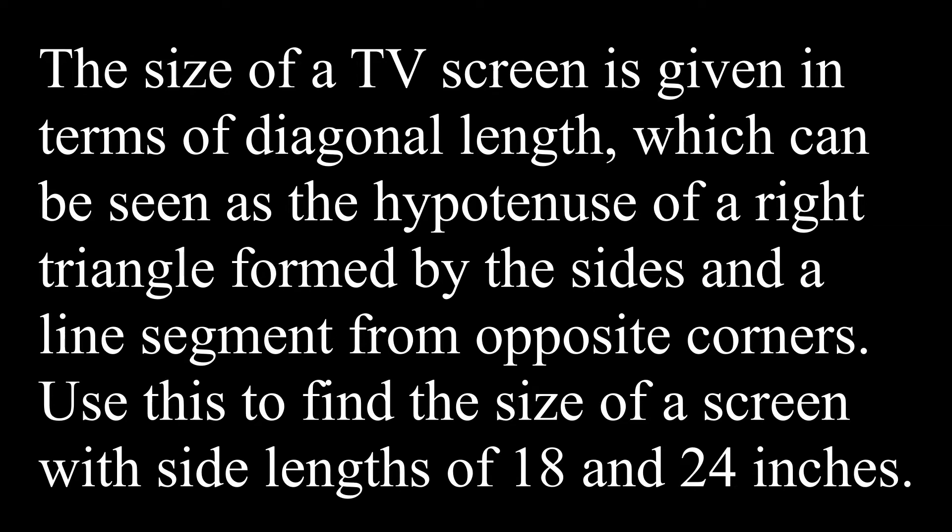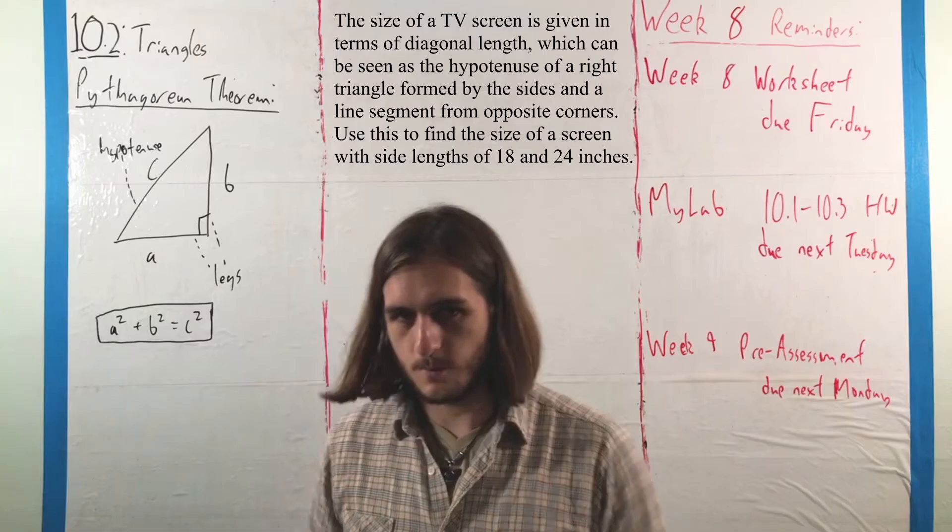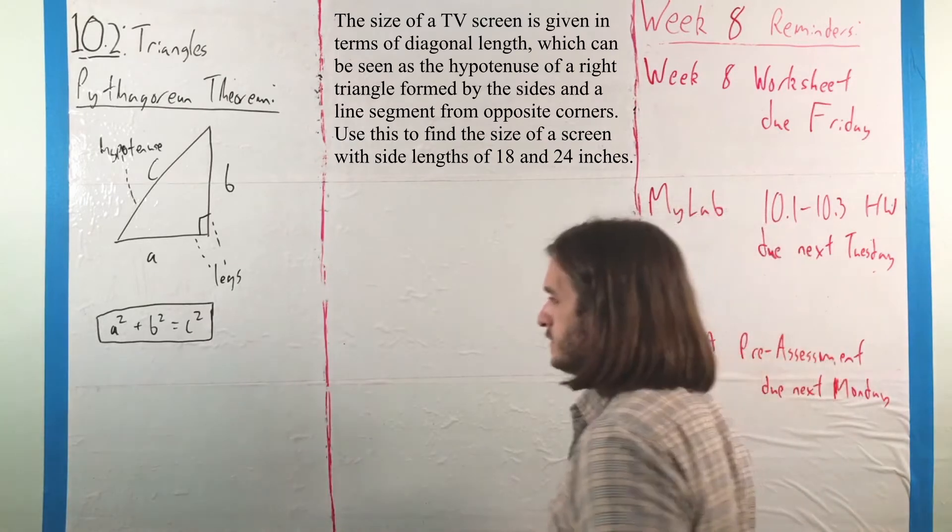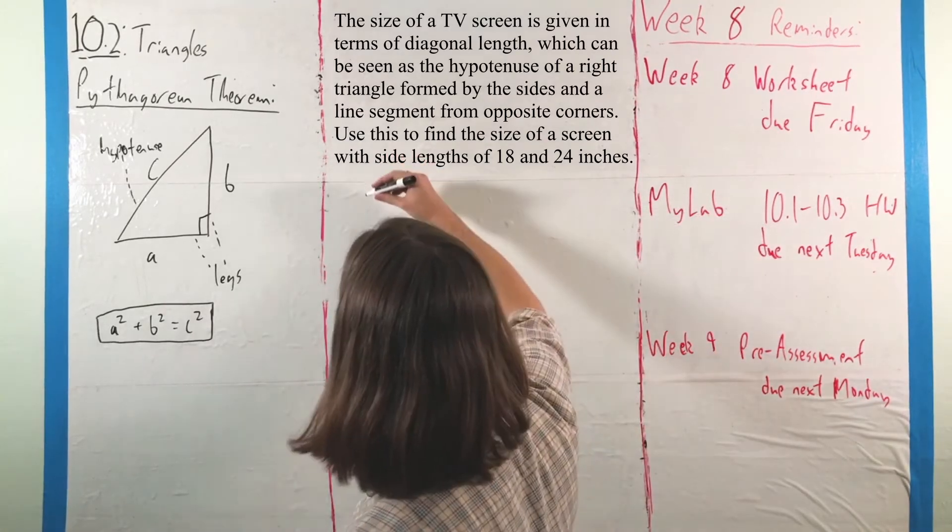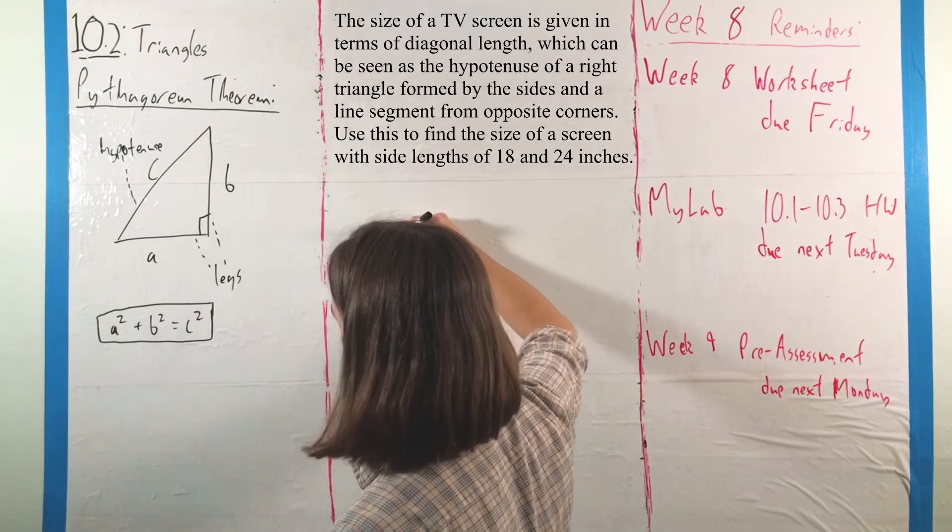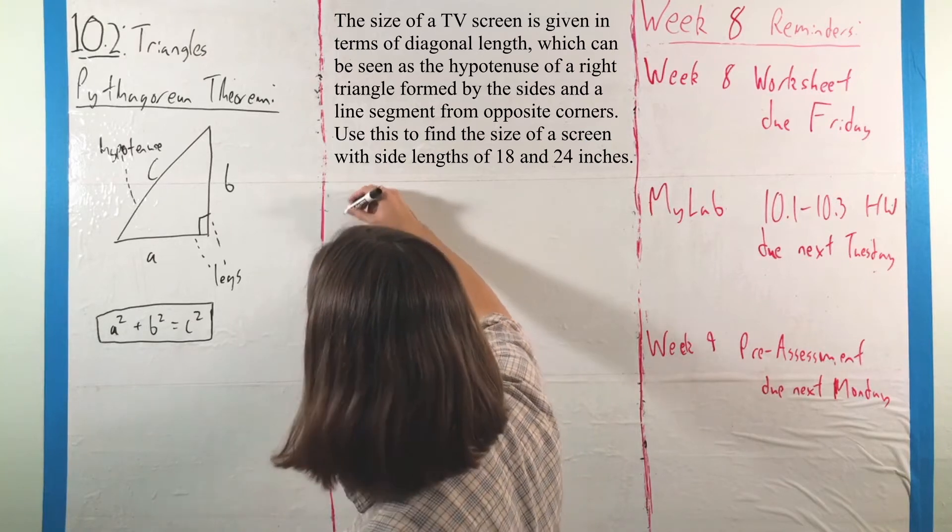Use this to find the size of a screen with side lengths 18 and 24 inches. So here, the first thing I would suggest doing is making sure we have a proper understanding of what this looks like.